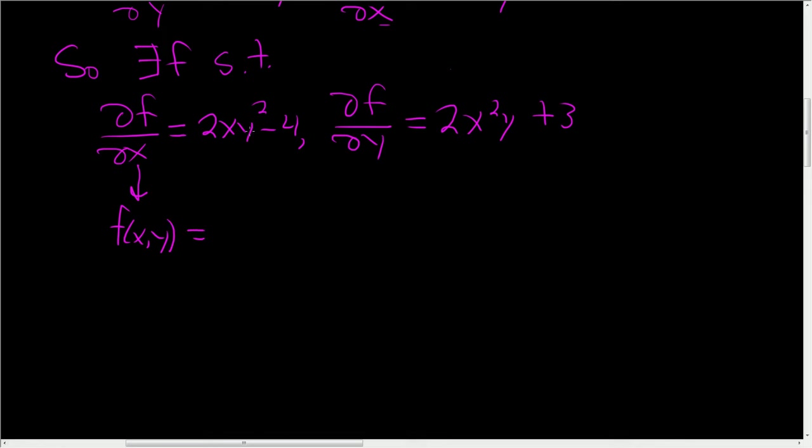let's see, this is constant the y². So we're going to get x² over 2. The twos will cancel so we'll just get x²y² - 4x plus an arbitrary function of y.